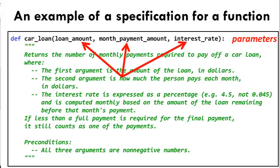The objects of information are intended to be, in order, the amount of a car loan in dollars, the monthly payments in dollars, the interest rate expressed as a percentage. The function sends back, or returns, the number of monthly payments required to pay off the loan, assuming that interest is calculated monthly based on the amount of the loan remaining before that month's payment.